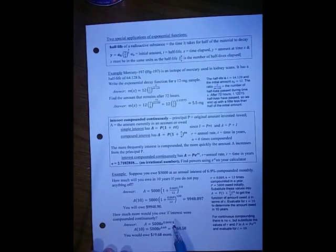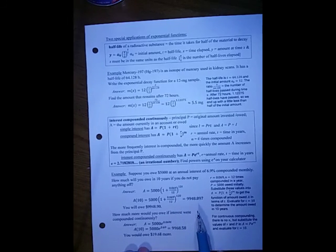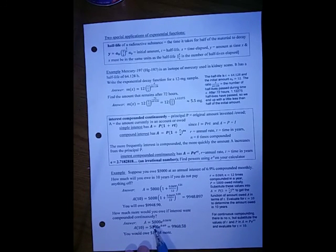How much more would you owe if interest were compounded continuously? 12 is quite often, so it won't be a big difference between that and continuous. You simply take the 5,000 and then E times that same rate, 0.069 to the power t. If you put in 10 years, that gives around $20 more than the monthly compounding.